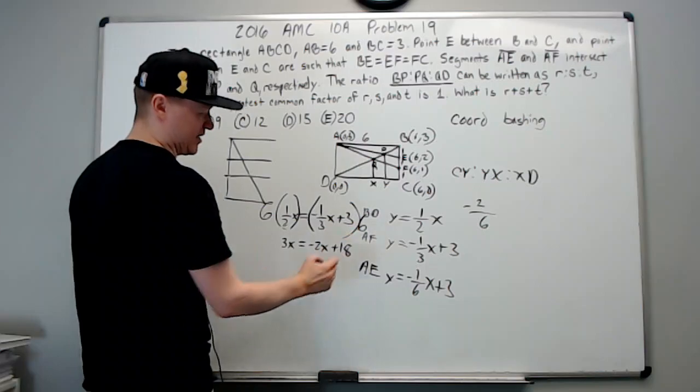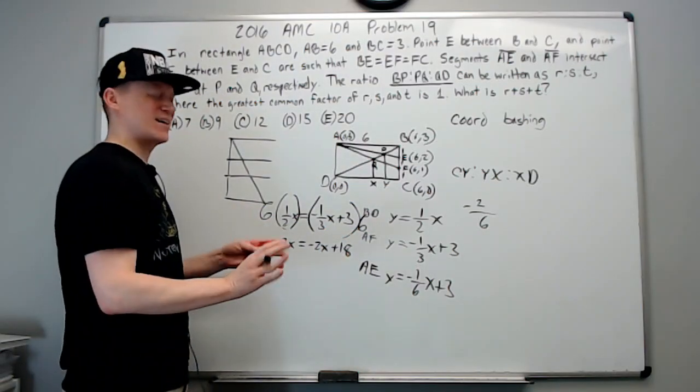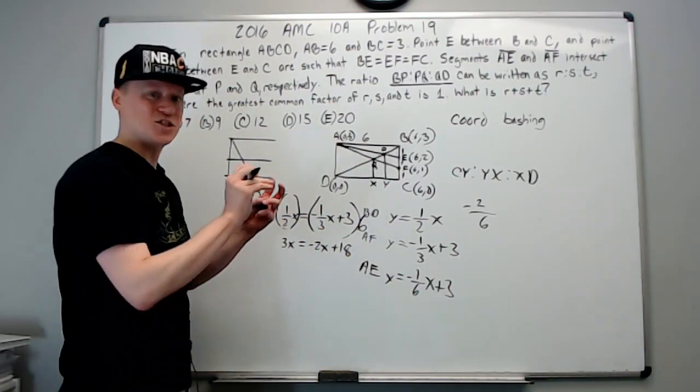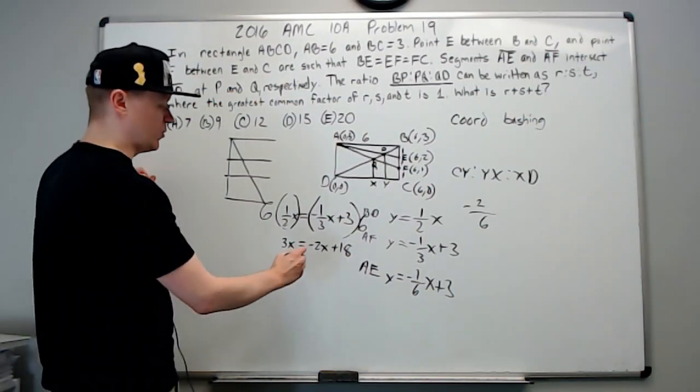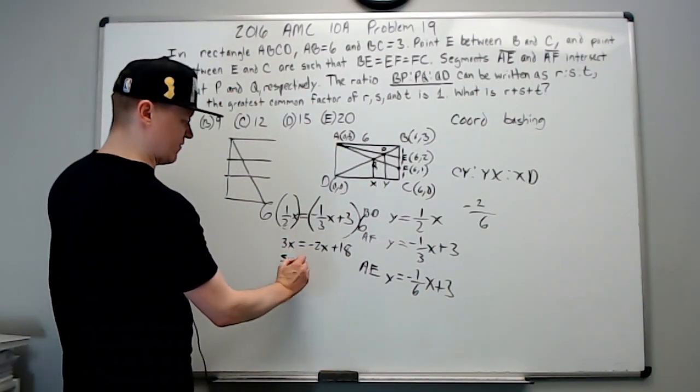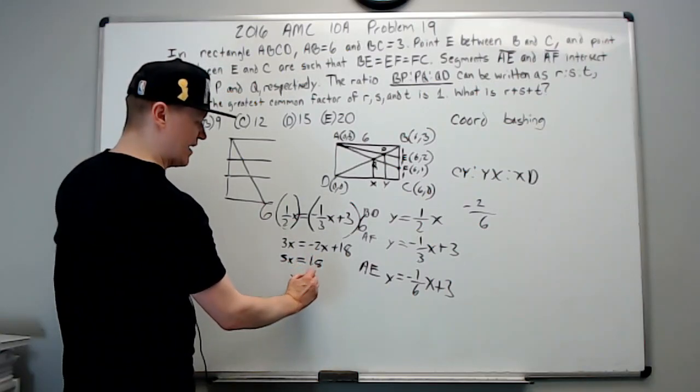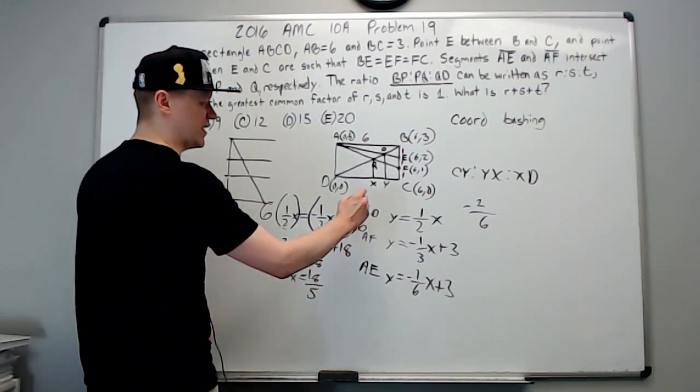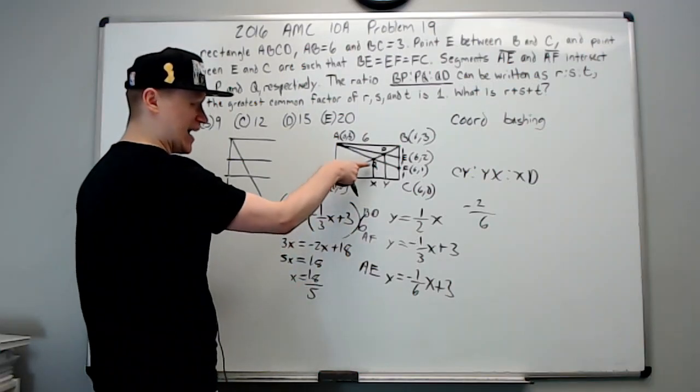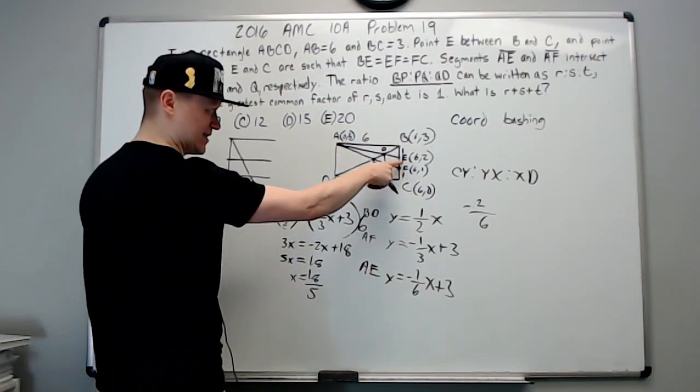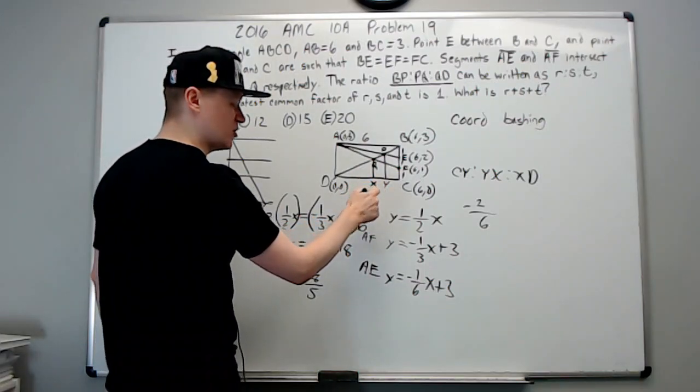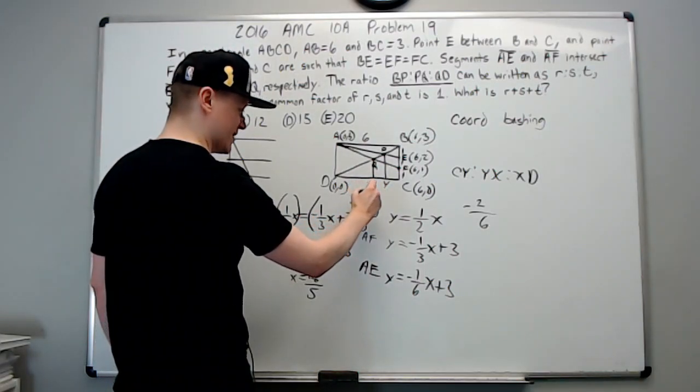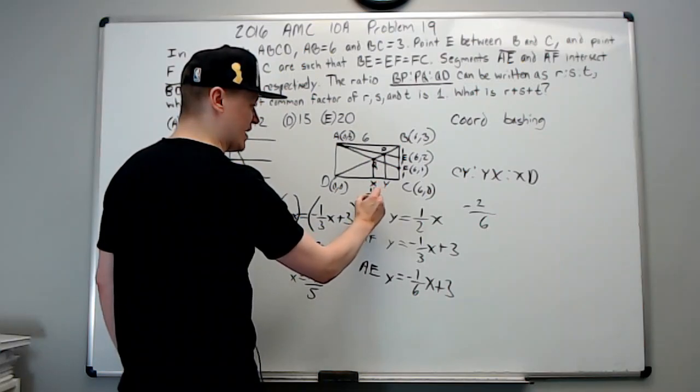We don't care if our notation is officially accepted among the elite of math. So we can add 2x over here to get 5x equals 18, and x will equal 18 fifths. Again, that's the x coordinate of Q because that's AF and BD's intersection point, which means it's also the x coordinate of what I called X down here.